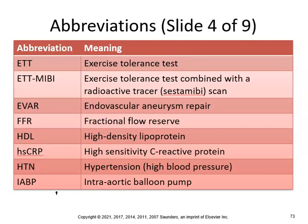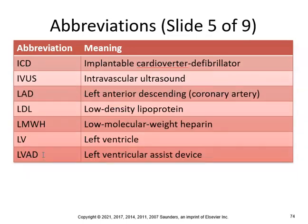ETT — exercise tolerance test, sometimes combined with a radioactive tracer. EVAR — endovascular aneurysm repair; FFR — fractional flow reserve; HDL — high-density lipoprotein, which you see in blood work alongside LDL; hsCRP — high-sensitivity C-reactive protein, a blood test; HTN — hypertension; IABP — intra-aortic balloon pump; ICD — implantable cardioverter defibrillator; IVUS — intravascular ultrasound.